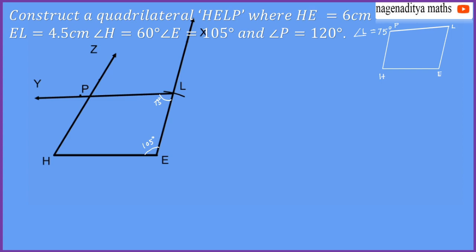So this is the required quadrilateral HELP, and this angle is 60 degrees. This is how we can construct a quadrilateral when two adjacent sides and three angles are given.